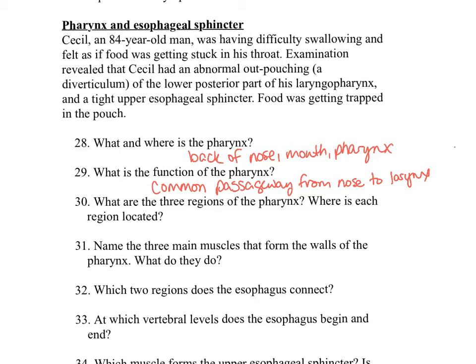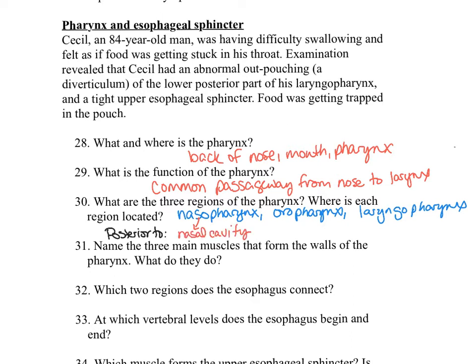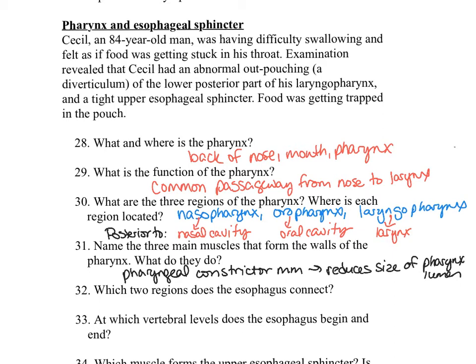Question thirty: what are the three regions of the pharynx and where is each located? The three regions are the nasopharynx (posterior to the nasal cavity), the oropharynx (posterior to the oral cavity), and the laryngeal pharynx (posterior to the larynx and superior to the esophagus). Question thirty-one: name the three main muscles that form the walls of the pharynx and what do they do? The three pharyngeal constrictor muscles are the superior, middle, and inferior constrictor muscles. Contraction of these muscles reduces the size of the pharyngeal lumen and brings about a peristaltic action during swallowing.